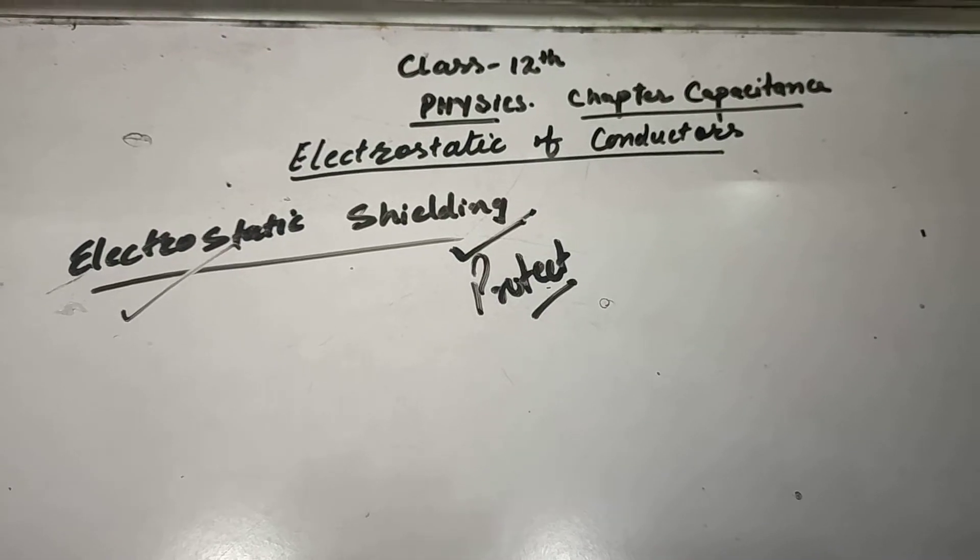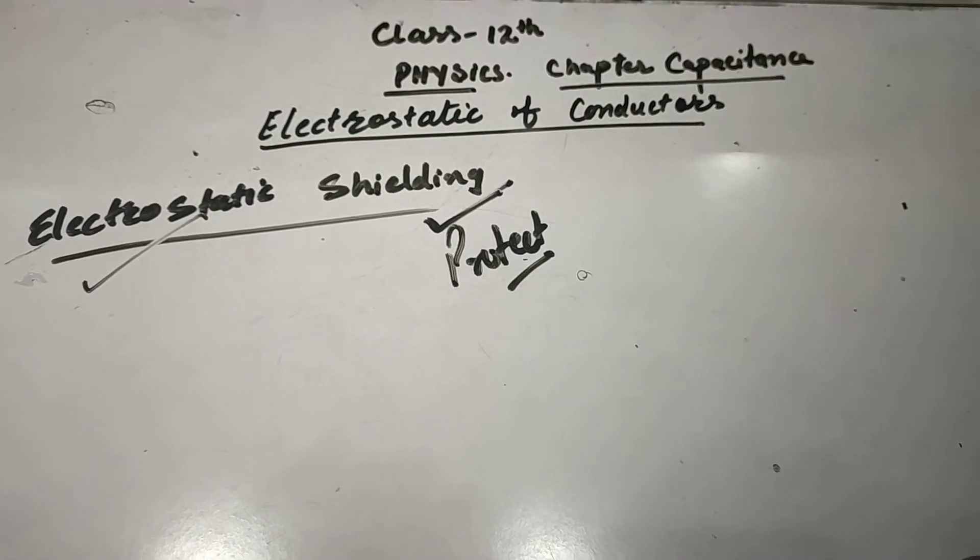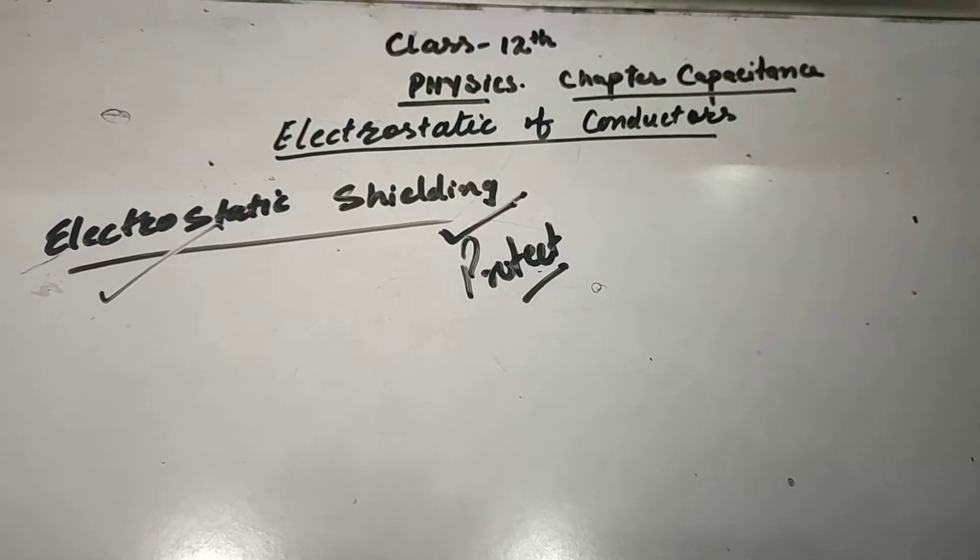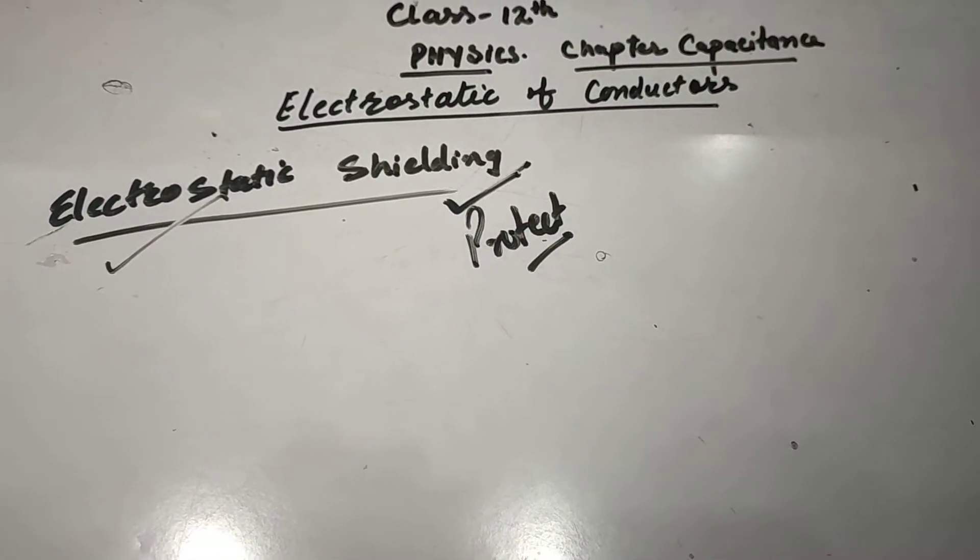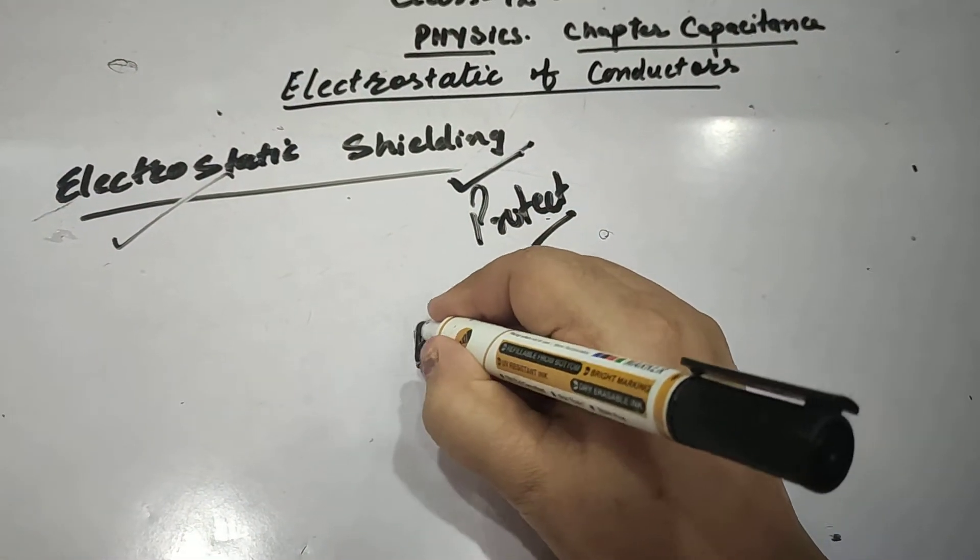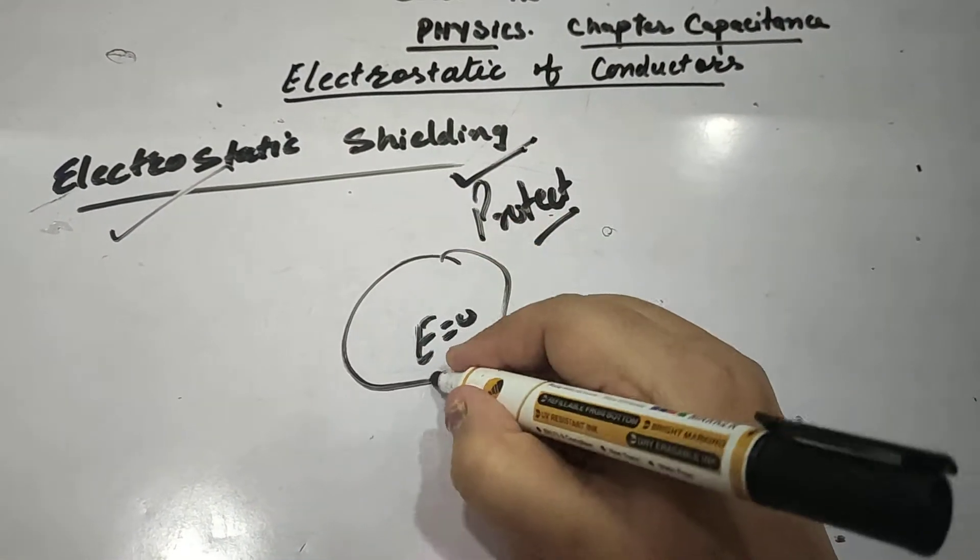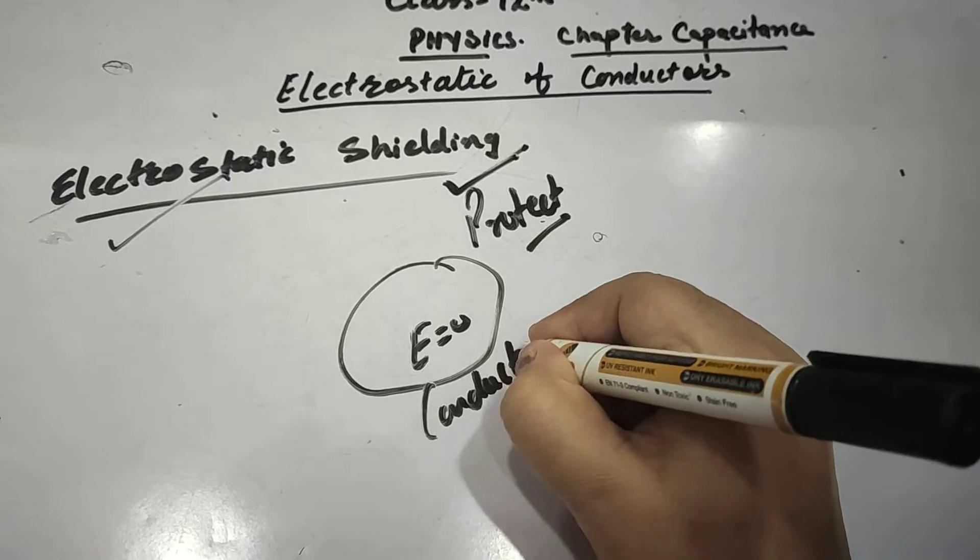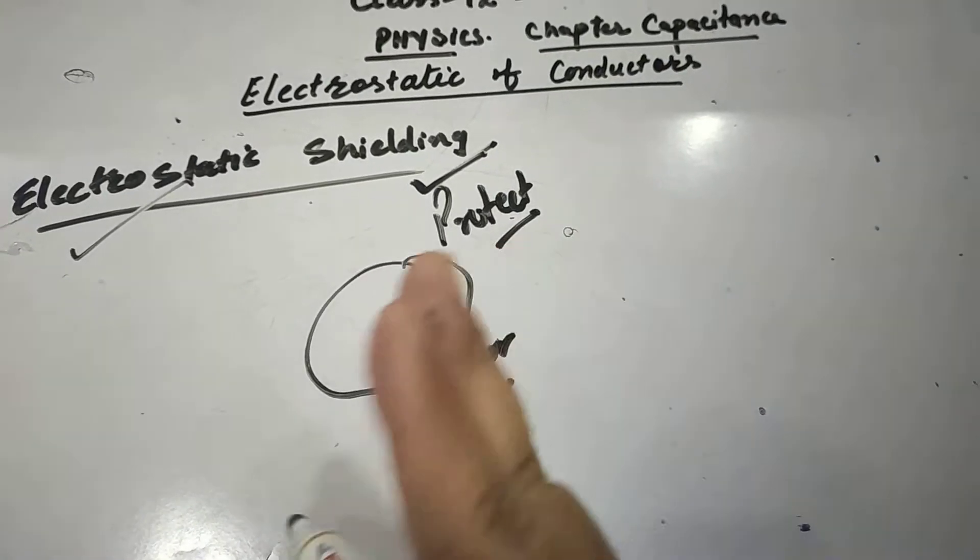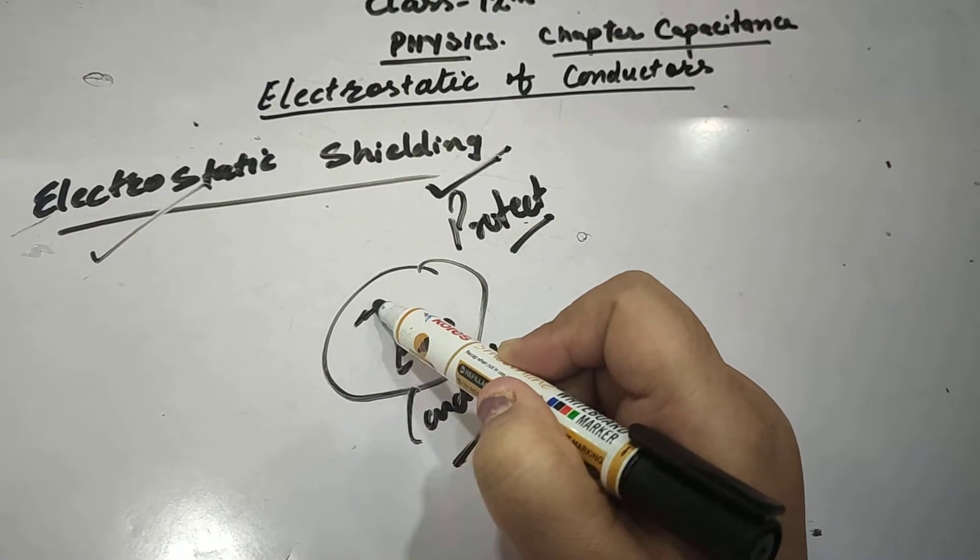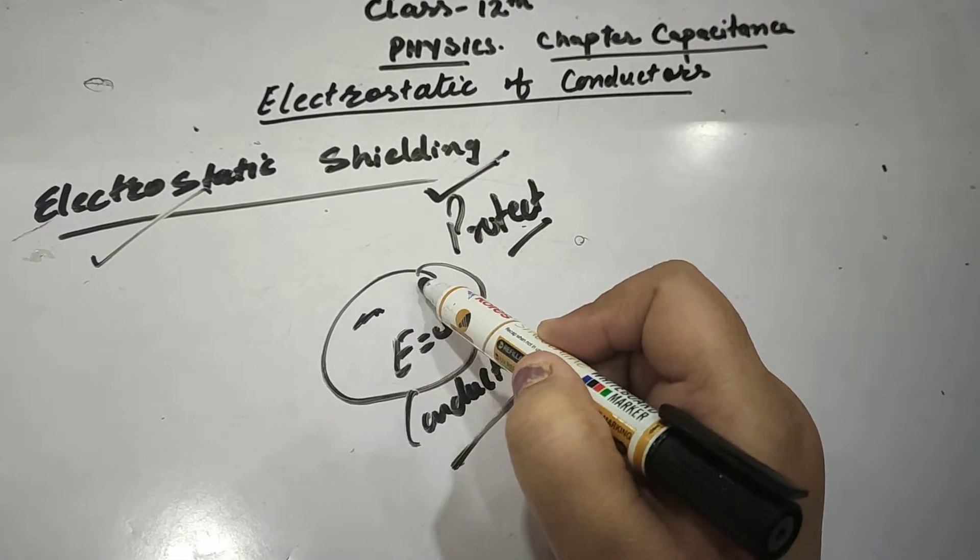But it can shield - we can protect anything with the help of the concept of electrostatics. Let us discuss this. We know that electric field is zero inside the conductor, right? It means if we keep anything which is to be protected against electric field inside the conductor, there will be no effect.